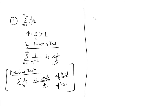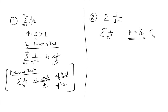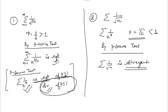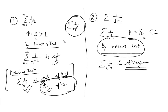Now one more example: check the behavior of the series 1 over the square root of n. Comparing with 1 over n to the power P, the value of P here is 1/2, which is strictly less than 1. So by the P-series test, this series is divergent — because whenever P is less than or equal to 1, this type of series is divergent. Since P = 1/2 < 1, the given series is divergent by the P-series test.